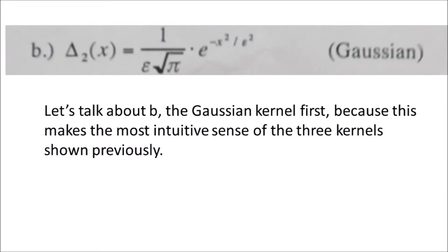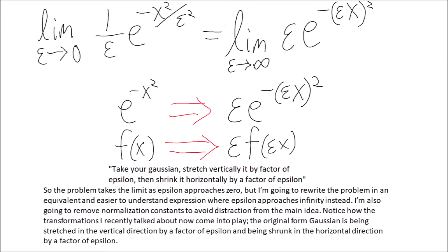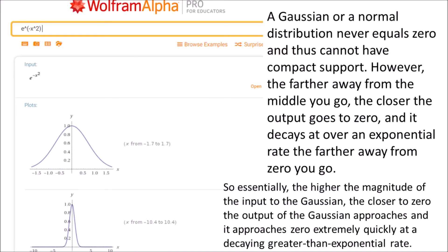Let's talk about the Gaussian kernel first, because this makes the most intuitive sense. The problem takes the limit as epsilon approaches zero, but I'm going to rewrite it in an equivalent and easier to understand expression where epsilon approaches infinity instead. I'm also going to remove normalization constants to avoid distraction from the main idea. Notice how the transformations now come into play: the original Gaussian is being stretched in the vertical direction by a factor of epsilon and being shrunk in the horizontal direction by a factor of epsilon.